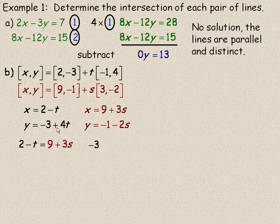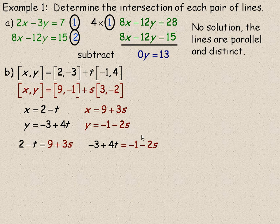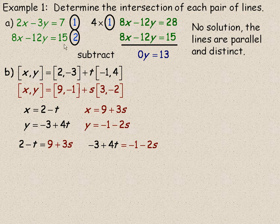So I will do the same thing with y here. I am going to equate the negative 3 plus 4t and the negative 1 minus 2s. And what I have now is two equations and two unknowns and it becomes a question very much like part a here.